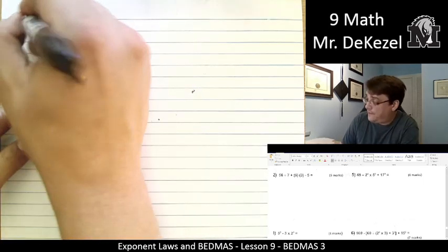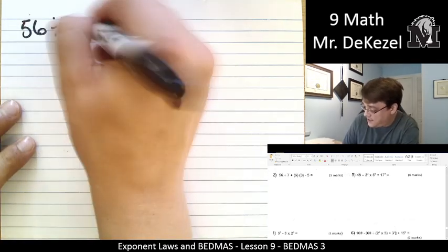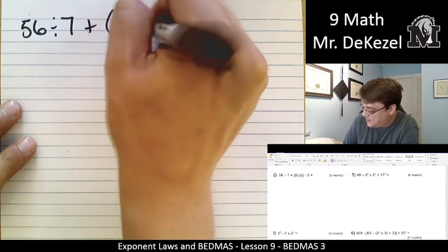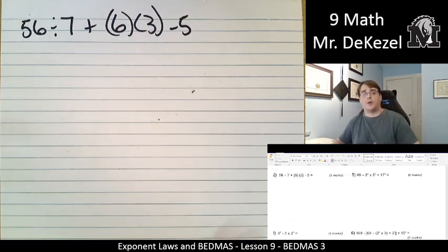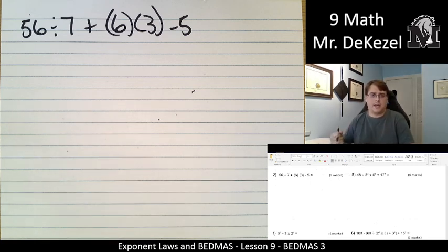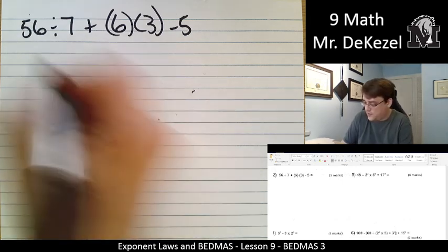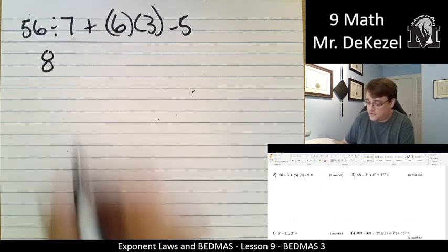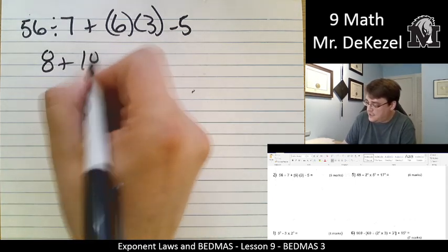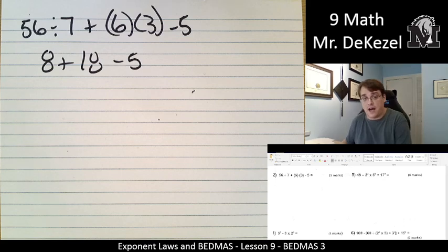Let's do a couple more. We have 56 divided by 7 plus 6 times 3 minus 5. So no brackets that have anything in them to do. We do have brackets that signify multiplication but we have a separate part for division. So let's do those two parts in the same step. 56 divided by 7 is 8, and 6 times 3 is 18.